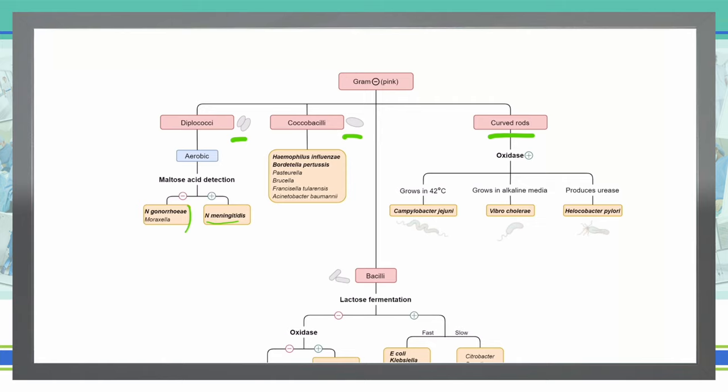If what we see under the microscope is coxobacilli, then we are dealing with one of these organisms: Haemophilus influenzae, Bordetella pertussis, Pasteurella, Brucella, Francisella tularensis, or Acinetobacter baumannii.